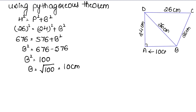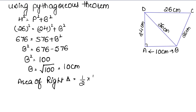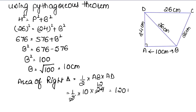Now, area of the right triangle BAD equals half into base into height, where AB is 10 cm and AD is 24 cm. So the area is half into 10 into 24, which gives us 120 cm².